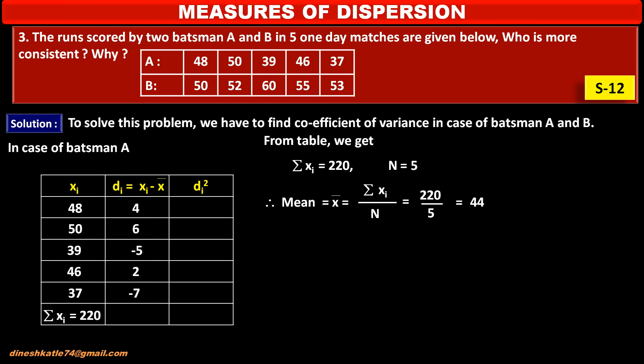Now we find the values of the third column, di squared. The value of di for the first observation is 4, so its square is 16. We find di squared for all other observations similarly. The sum of all di squared values, denoted summation di squared, equals 130.